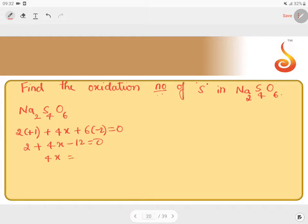Solving this, 4x = 10, so x = 10/4 or 5/2. You are getting a fractional oxidation number - that's not correct.